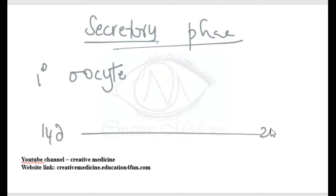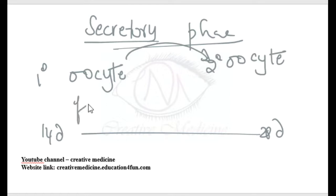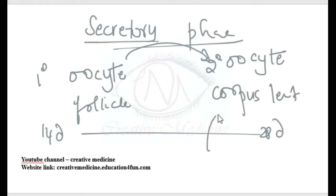The primary oocyte gets converted to a secondary oocyte, and the follicles will form the corpus luteum. The luteinizing hormone will maintain the corpus luteum in a non-pregnant female.